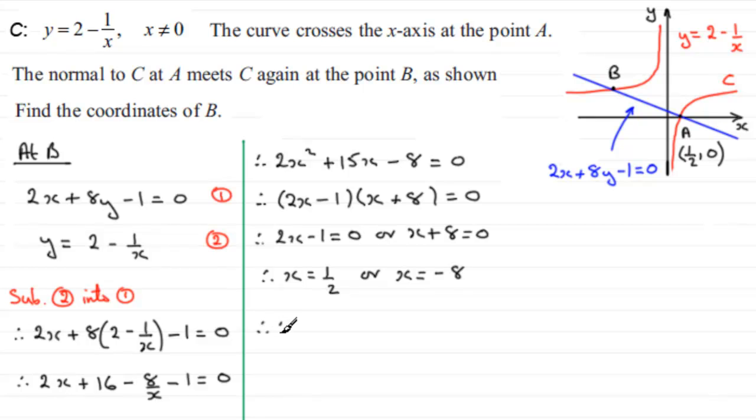So therefore we can say, at B, x equals minus 8. Well we've got to find the coordinates of B, so we now need the y-coordinate. And the best place we can get the y-coordinate would be to substitute into equation 2. So I'm going to say sub x equals minus 8 into equation 2. And if we do that, then what we're going to have, we'll just come down here now, what we're going to have will be that therefore y would equal 2 minus 1 divided by minus 8. Well that's going to be 2 and 1 eighth. Or if you keep it as a top heavy fraction, which I prefer, it's going to be 17 over 8.